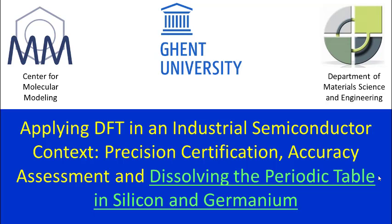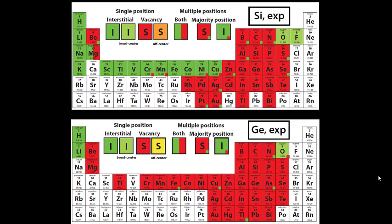And that is the third topic of this presentation, dissolving the periodic table in silicon and germanium. For this audience, I don't have to explain that doping silicon and germanium is very important, and one of the first questions you want to answer when you dope it is where does my impurity element sit.